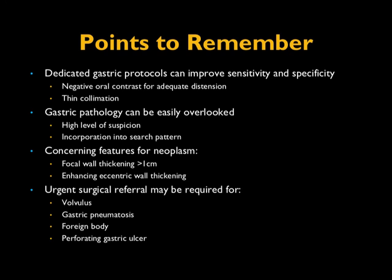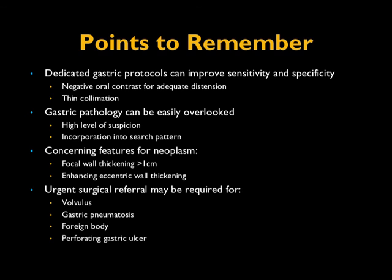To summarize, several points to remember: protocol is critical — without good gastric distension you will undercall or overcall disease. It's easy to overlook gastric pathology in the acute abdomen setting. Features favoring neoplasm include focal thickening with enhancement over one centimeter thick. There can be significant overlap between inflammatory and neoplastic processes. In select cases — volvulus, gastric pneumatosis, foreign body, or perforation — urgent surgical referral is necessary.